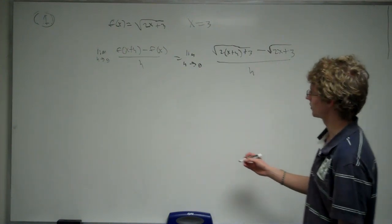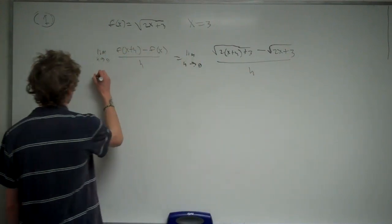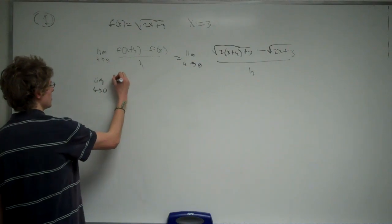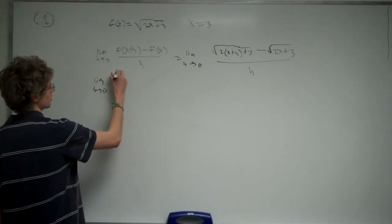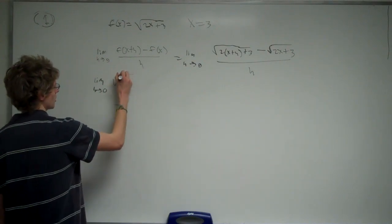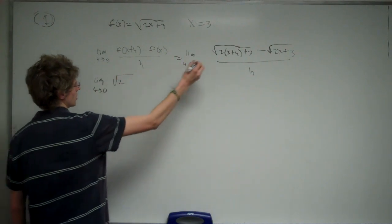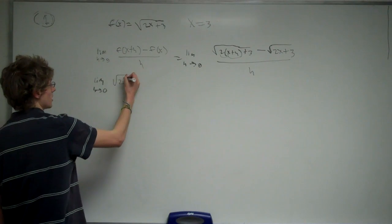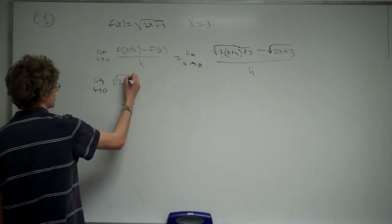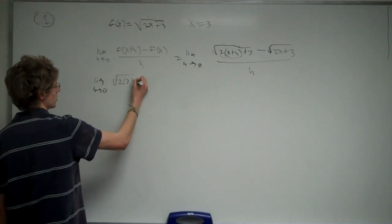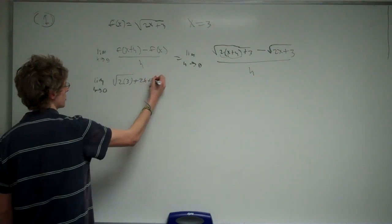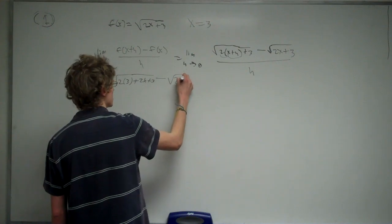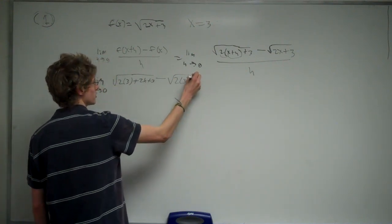So, that's going to give us the limit as h approaches 0. We can distribute this out to the x's and the h there. So, we're going to get 2 times x, which in this case is 3, plus 2h plus 3, minus the square root of 2 times 3 plus 3, all over h.